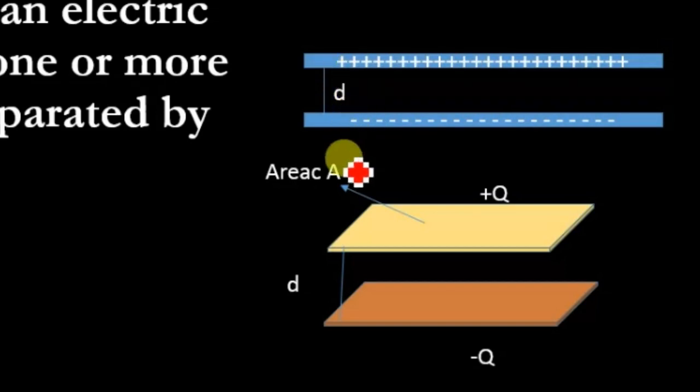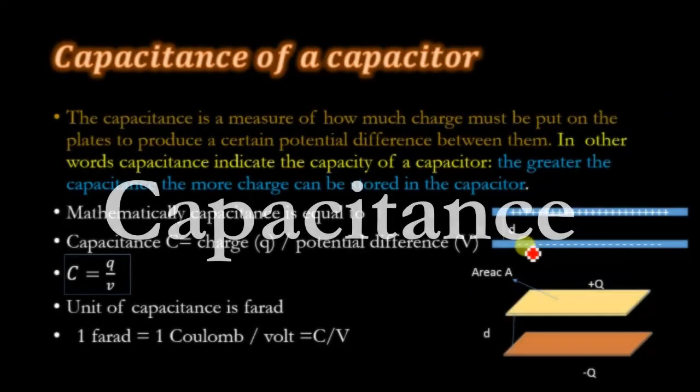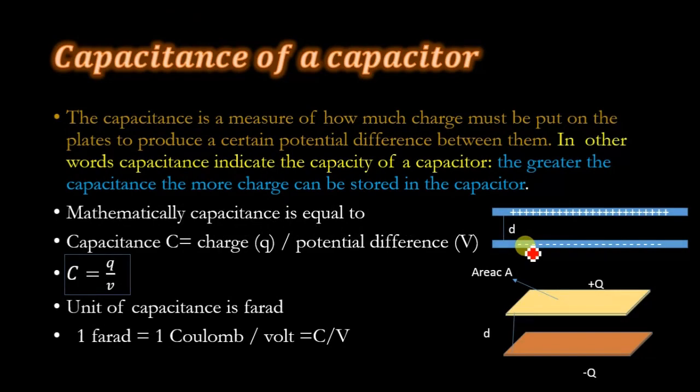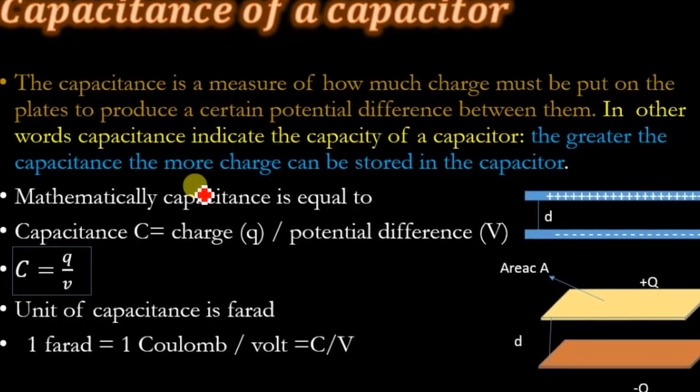This is the area of the plate. The capacitance is a measure of how much charge must be put on the plates to produce a certain potential difference between them. In other words, capacitance indicates the capacity of a capacitor. The greater the capacitance, the more charge can be stored in the capacitor.